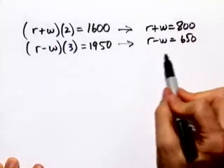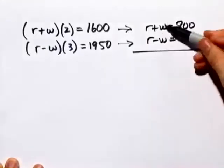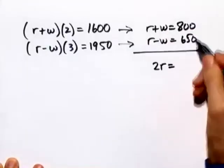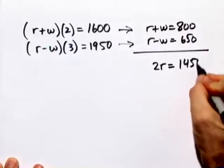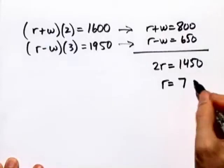Now these systems of equations are much easier to solve. In fact, it's already set to eliminate the w's by the addition principle. If we add down the left, we get 2r. And if we add down the right, we get 1450. So if we divide both sides by 2, we have r. R comes out to be 725.